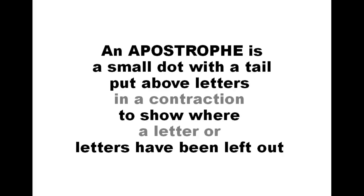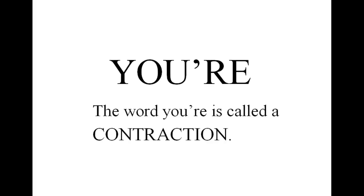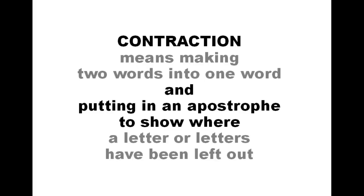An apostrophe is a small dot with a tail put above letters in a contraction to show where a letter or letters have been left out. There's an apostrophe right there. You are — you're. The word 'you're' is called a contraction. Contraction means making two words into one word and putting in an apostrophe to show where a letter or letters have been left out.